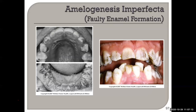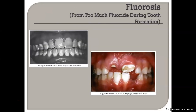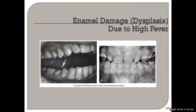Amelogenesis imperfecta — faulty enamel production; sometimes you don't have any enamel at all. Fluorosis ranges from mild to severe. Enamel damage or dysplasia due to high fever: when two teeth look unusual, check the other side to see if it's bilateral — because if it's here and here, it means that during tooth formation something was happening, like a high fever.